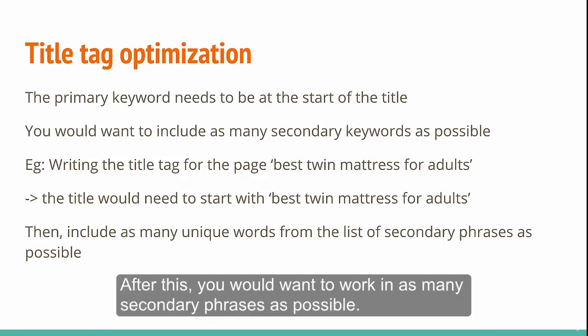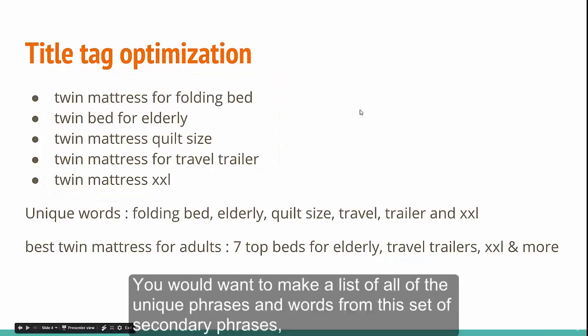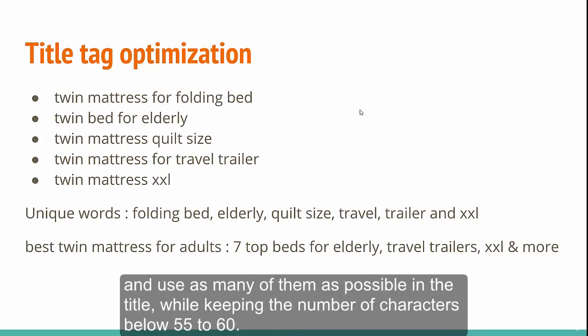After this, you would want to work in as many secondary phrases as possible. The secondary phrases we have for this page are these. You would want to make a list of all the unique phrases and words from this set of secondary phrases and use as many of them as possible in the title while keeping the number of characters below 55 to 60.